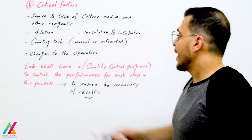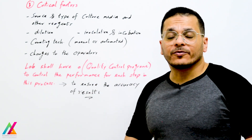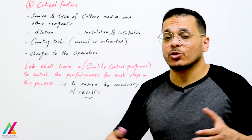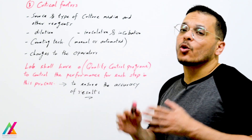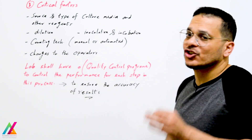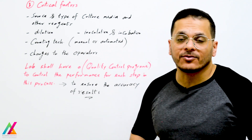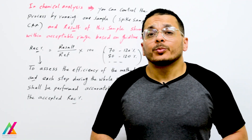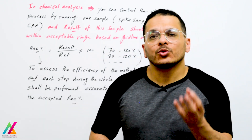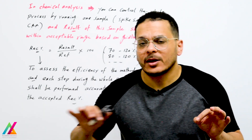Changes to operators and the lab are needed to control the performance of the measurement process and ensure the accuracy of results. The lab shall have a quality control program to control the performance of each step in this process and to ensure the accuracy of the final result. A quality control program is very important in every lab to ensure accuracy at the end.